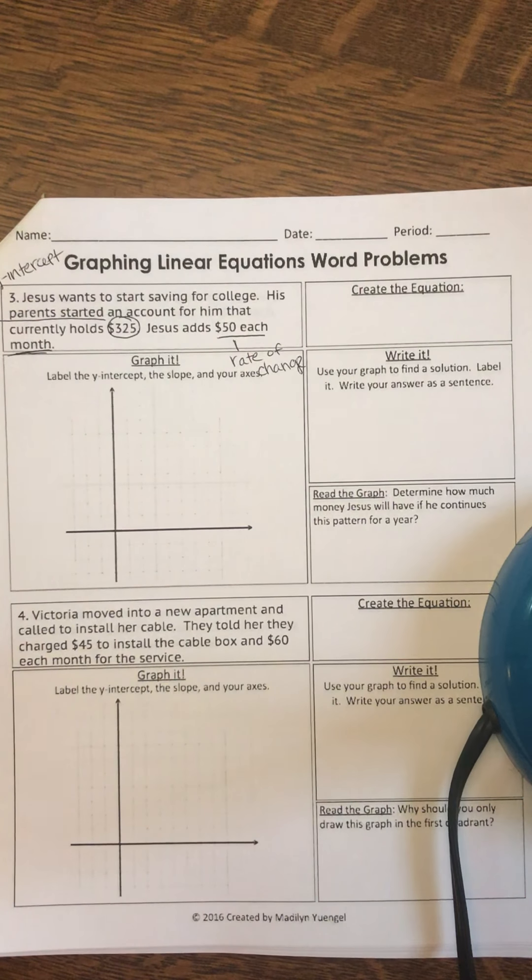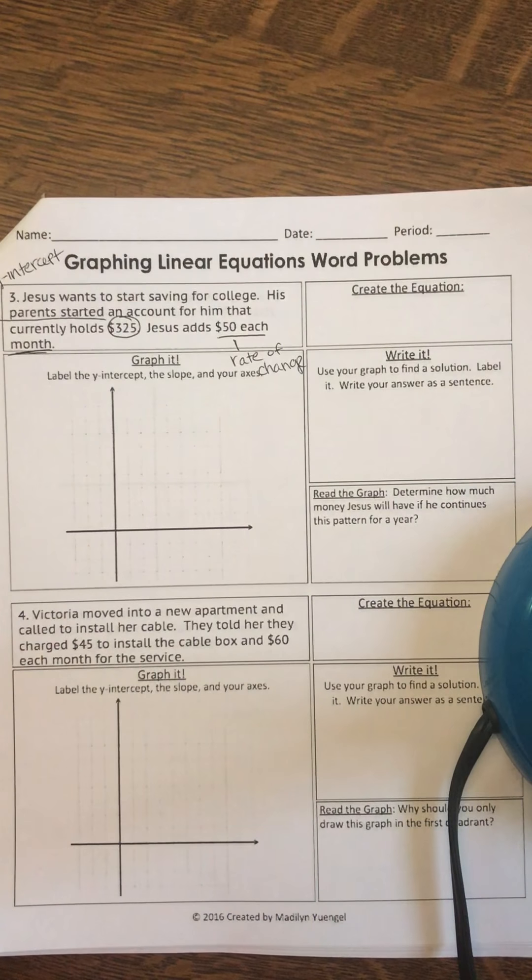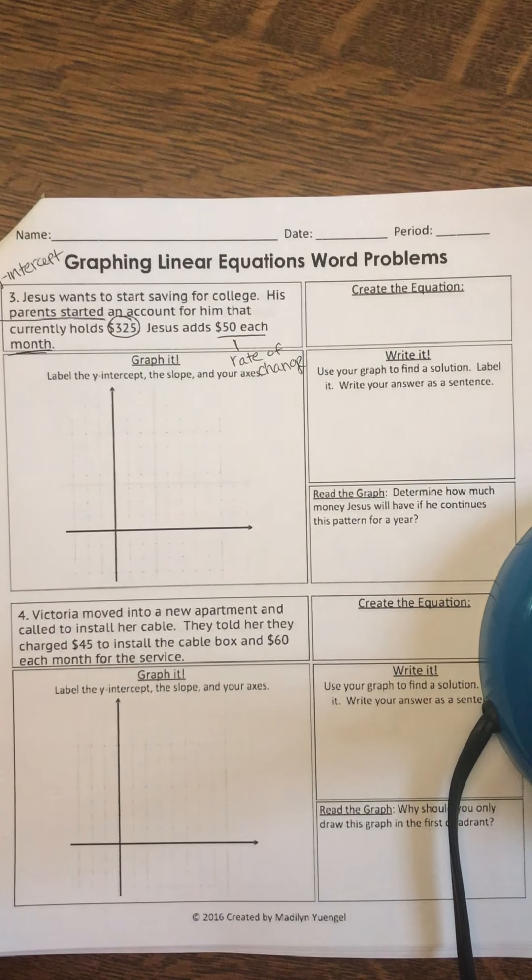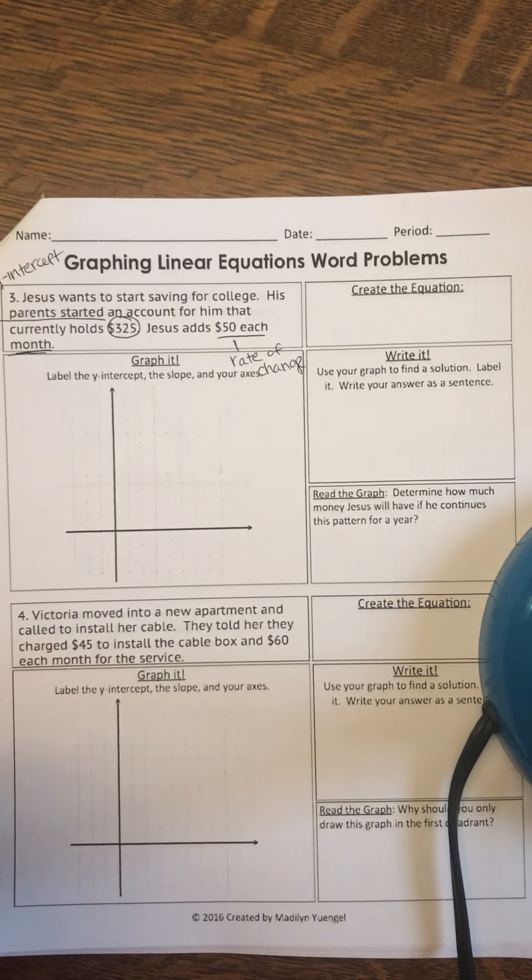We are on the graphing linear equations word problems page in the eighth grade packet. I'm going to model solving question three. First I'm going to read the word problem. Jesus wants to start saving for college. His parents started an account for him that currently holds $325. Each month Jesus adds $50.